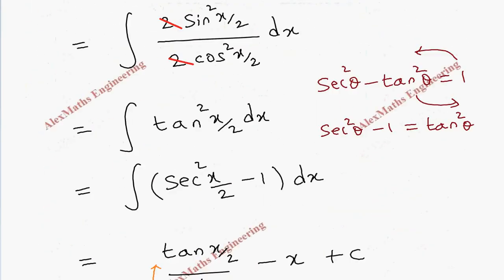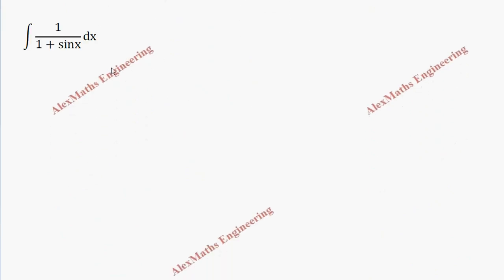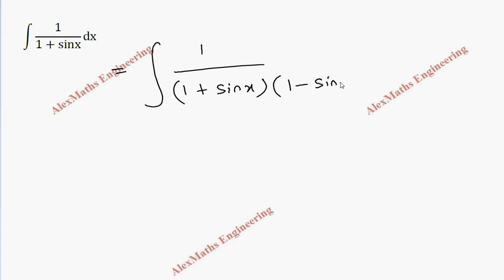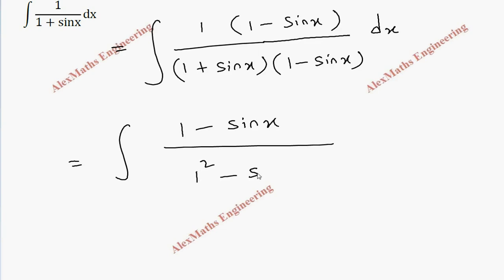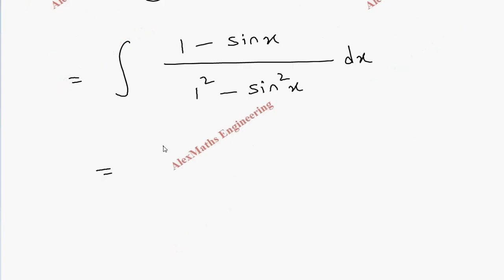For the next problem, we have the integral of 1 divided by (1 plus sin x) dx. We multiply by the conjugate: multiply both numerator and denominator by (1 minus sin x). The numerator becomes (1 minus sin x), and the denominator is in the form (a plus b)(a minus b), giving 1 squared minus sin squared x, which equals cos squared x.